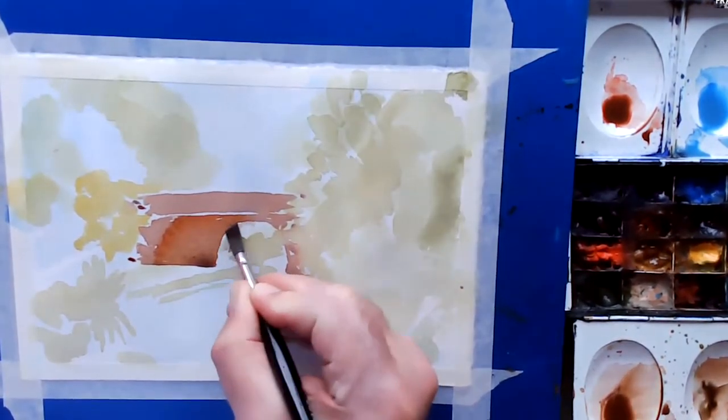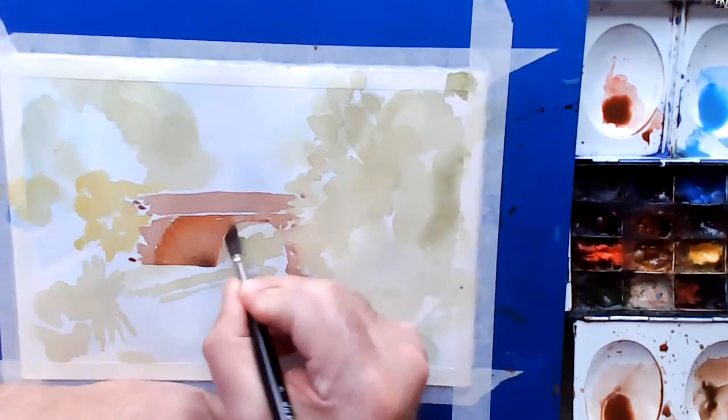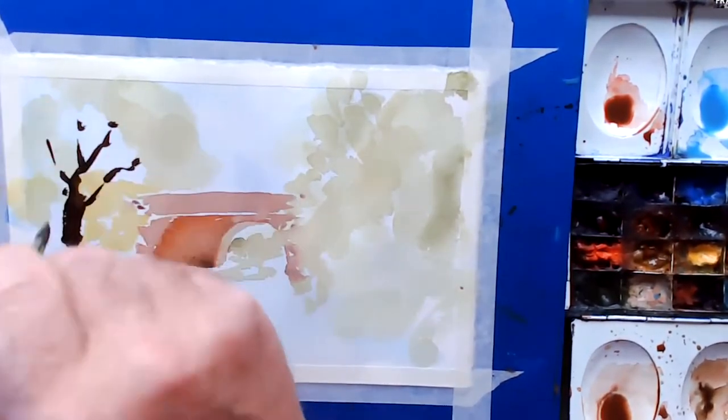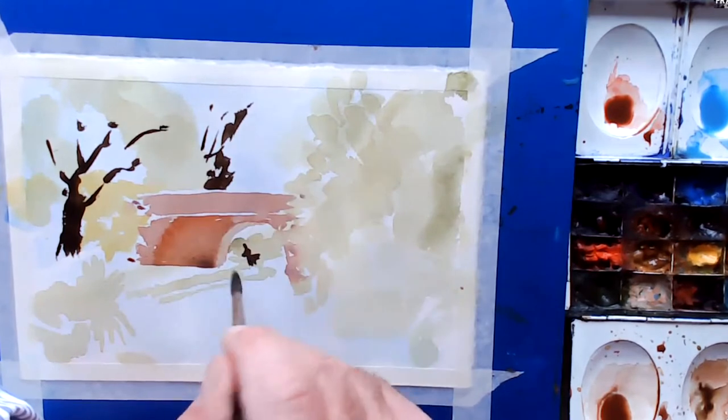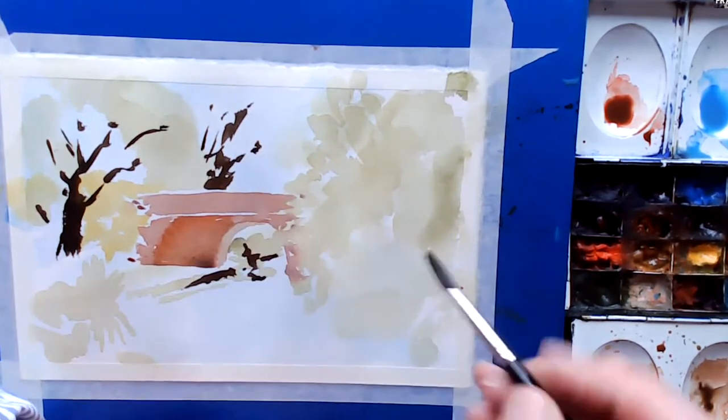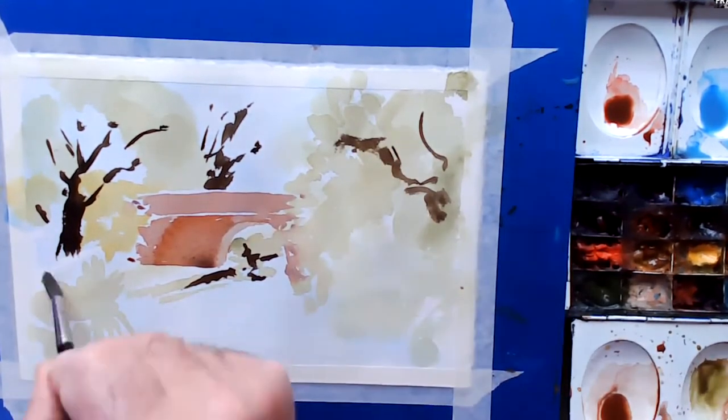And you end up moving forward towards the darks as you move along. You start incredibly light with the first wash as I did with the light blue and the green. And as you can see now I'm putting in a bit of calligraphy, I'm starting to paint stronger values, stronger darks especially where the trees are.